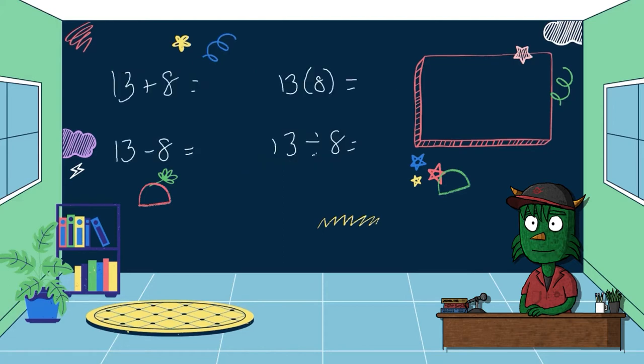First let's look at something simple. 13 plus 8, just a simple addition problem. 13 plus 8 comes out to be 21. 13 minus 8, another simple subtraction problem. 13 minus 8 is 5.